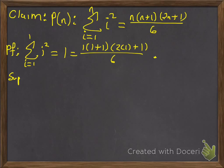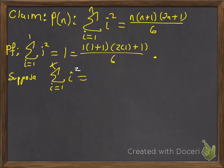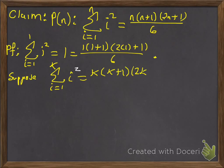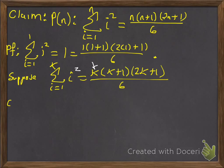Now we want to show this is true for the first k squares. So the sum from i equals 1 to k of i squared — we're going to assume that equals k(k+1)(2k+1) over 6. When we're all done, wherever we see a k, when doing the next step, those k's should be k+1s. If we can get there, we've proved this.